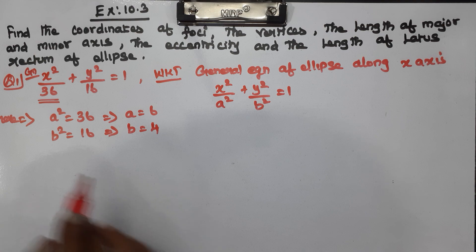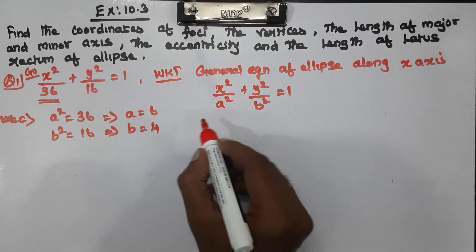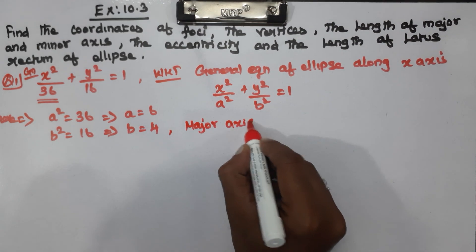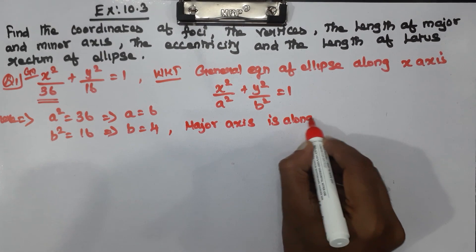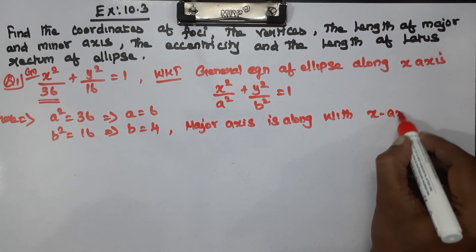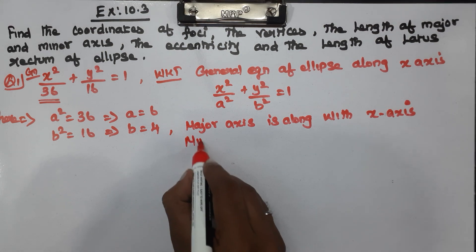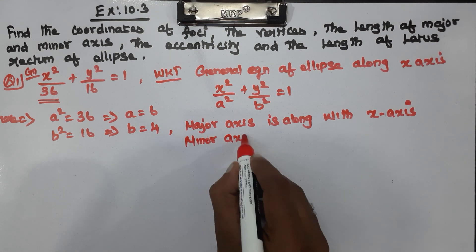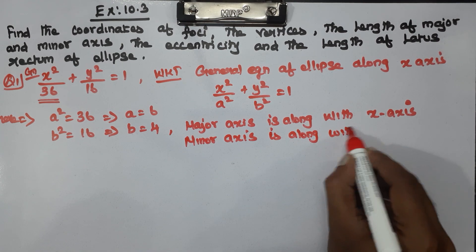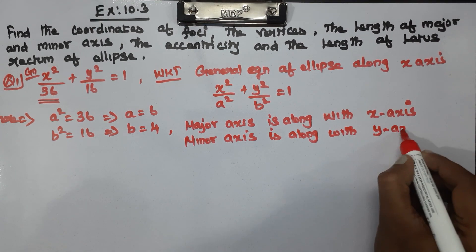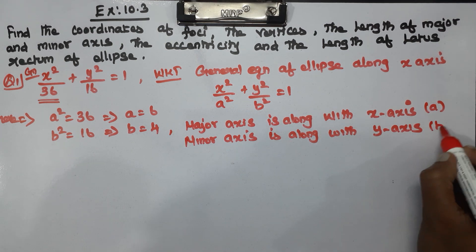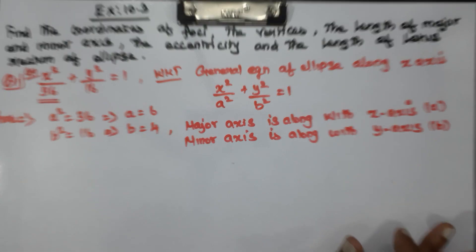Next — where is the major axis? The major axis is along the x-axis. The minor axis is along the y-axis. The minor axis symbol is b.